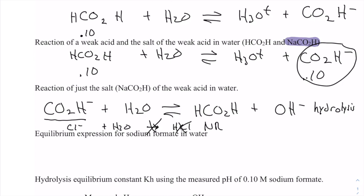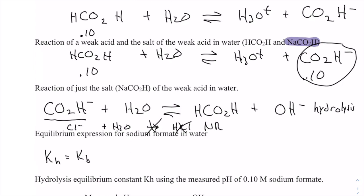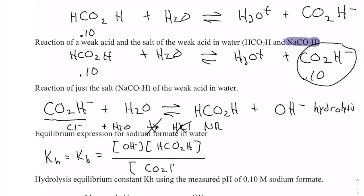The equilibrium expression — we call it KH for hydrolysis, also known as KB because we're forming hydroxide and it's a very weak base. The expression is going to be the hydroxide ions times the formic acid that's formed at the same time, over the anion of the salt.